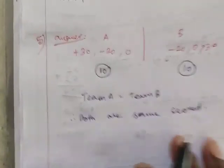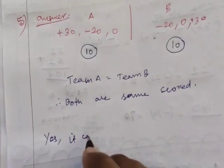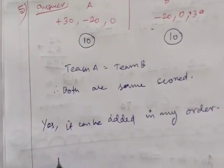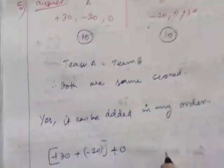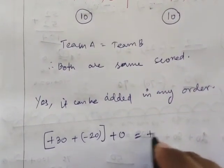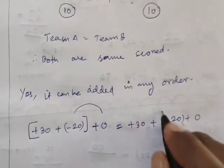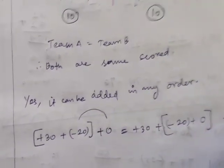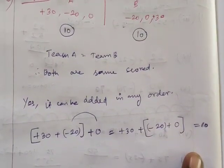We can say that in any order, yes, it can be added in any order. Plus 30 plus minus 20 plus 0, plus 30 plus minus 20 plus 0. This is the same number, we can say 10, so team A and team B have the same score.